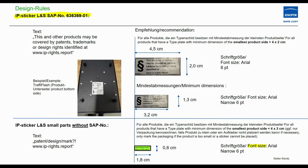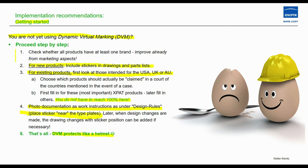I also gave implementation recommendations — getting started steps for those not yet using dynamic virtual marking. Step by step: first check whether all products have at least one brand — improving from a marketing perspective. For new products, include stickers in drawings and parts lists. For existing products, first look at those intended for the US, UK, or Australia. Choose which products should actually be claimed in court in those countries in the event of a case, and fill in the most important export products first.